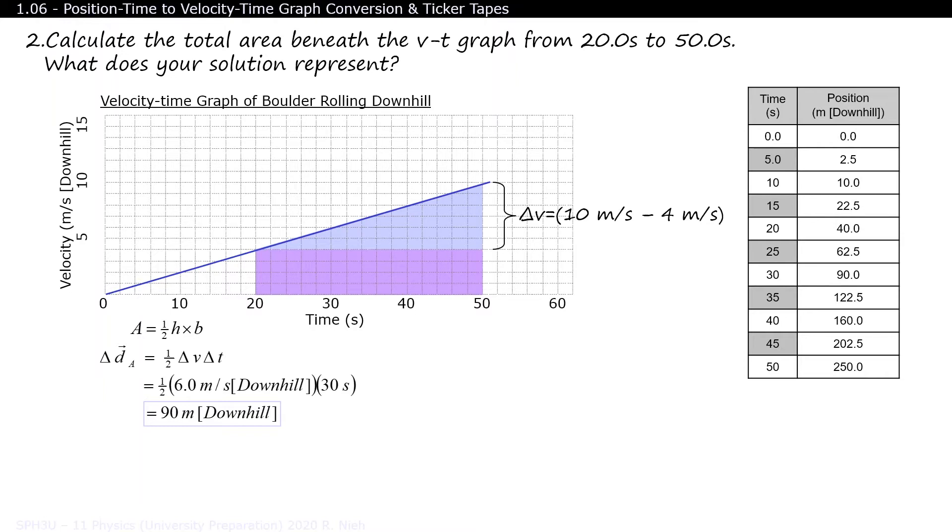The surface area of a rectangle is height times base. This time around, the height of the rectangle is 4 meters per second minus 0 meters per second. And 4 meters per second times 30 seconds equals 120 meters downhill.